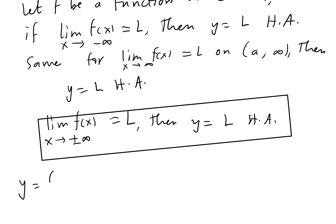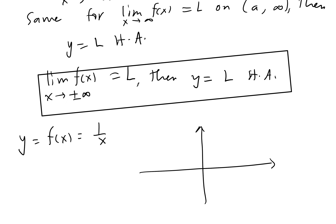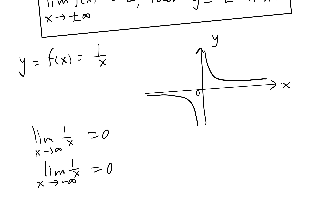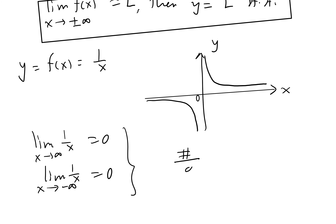A common application is the function y equals 1 over x. We use this a lot when it comes to limits. The limit of 1 over x as x approaches infinity is 0, and the limit of 1 over x as x approaches negative infinity is also 0. So we can say: a number over infinity is 0.